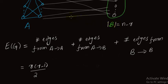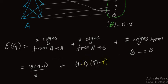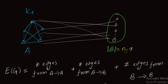For edges from A to B: there are n−r vertices in B, and since A is a complete subgraph with r vertices, each vertex in B can connect to at most r vertices in A. So the number of edges from A to B is at most (n−r) × r. The order of B is n−r.